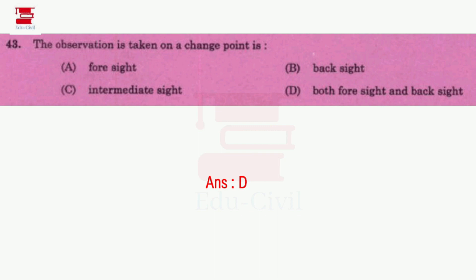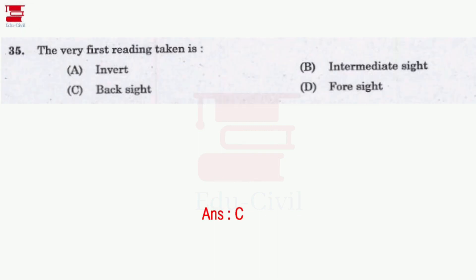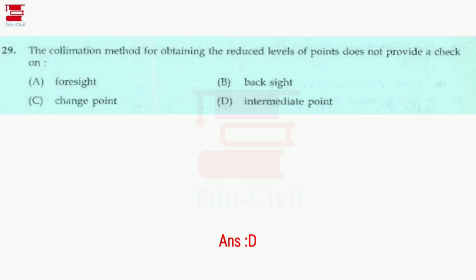Both foresight and backside are taken on a change point. The very first reading taken is the backside — option C is the correct answer. The last reading is the foresight, and intermediate readings are in between. The collimation method does not provide a check on intermediate points — the check formula is: last RL minus first RL = sigma backside minus sigma foresight. Intermediate sight is the answer — option D.